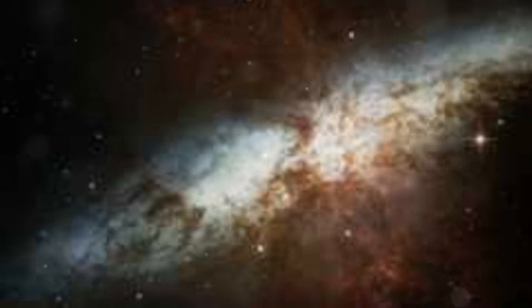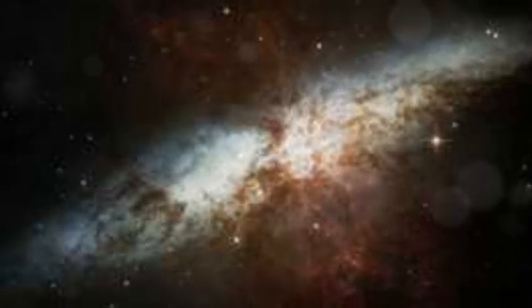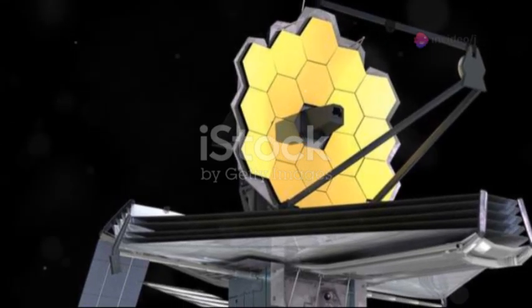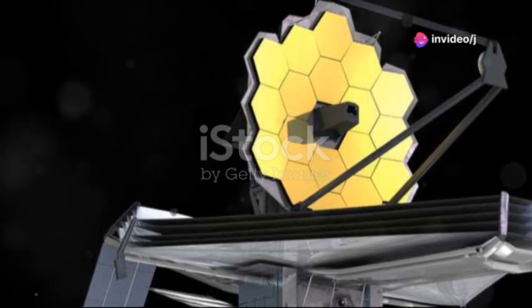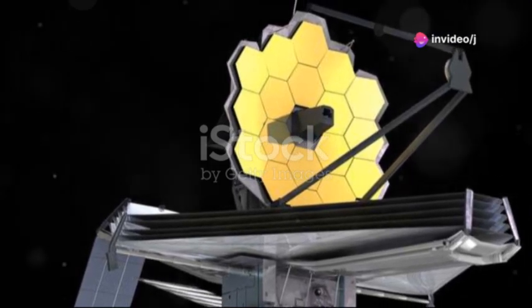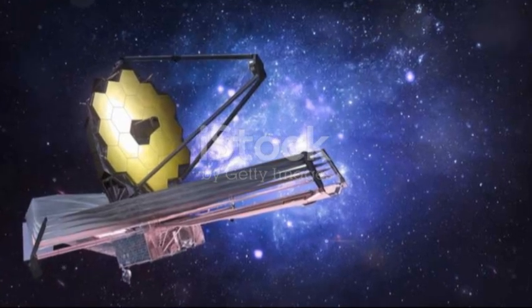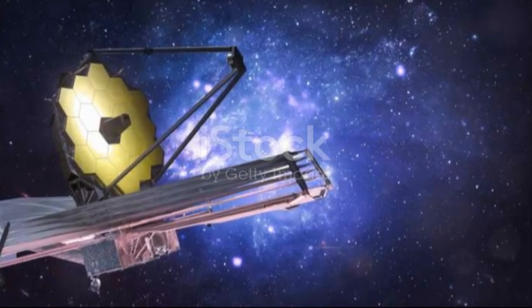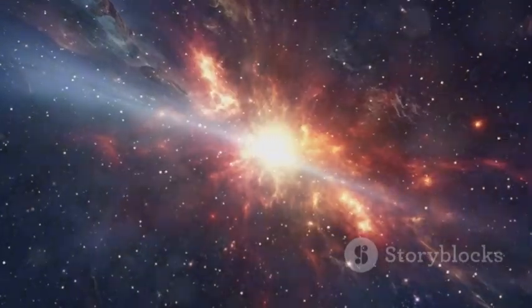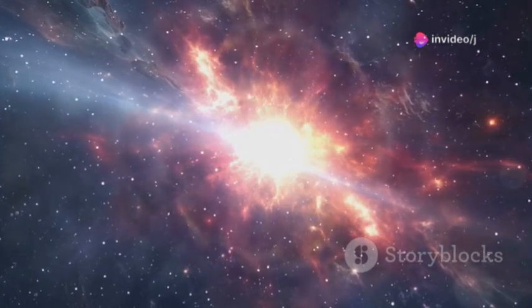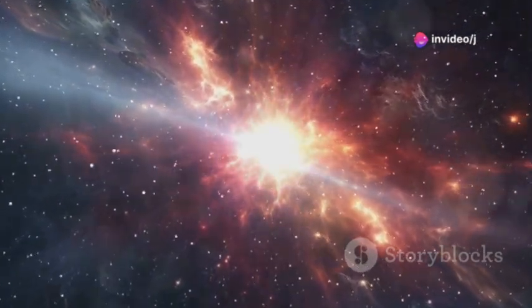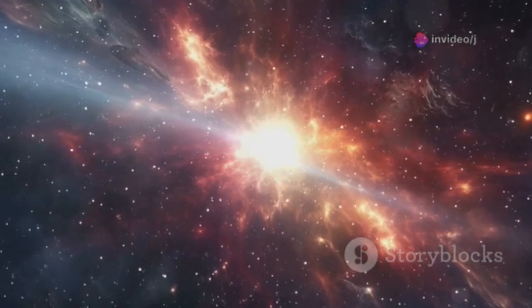While Hubble can't see this ancient light, Webb can, capturing images that tell the story of the universe's infancy. That's why Webb acts like a time machine, capturing the universe's baby pictures from over 13 billion years ago, a feat unmatched by any other telescope. By studying this light, we piece together the story of cosmic dawn, the first stars igniting and filling the universe with their brilliant light.